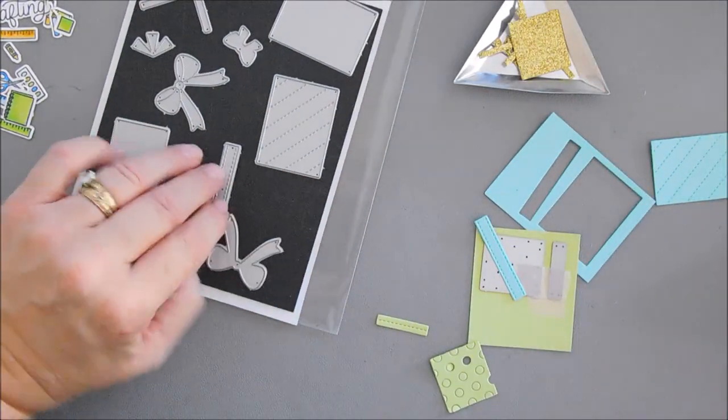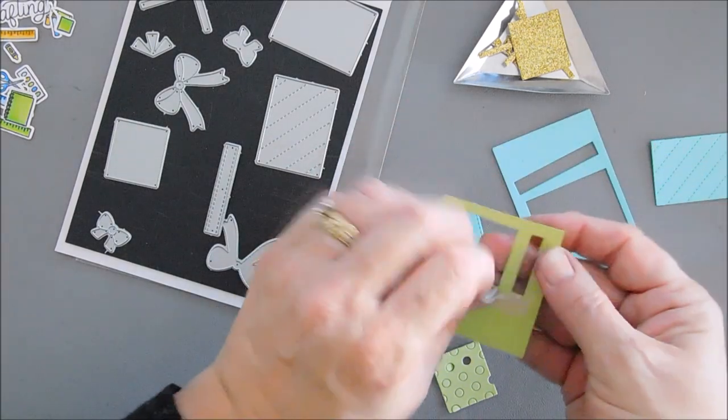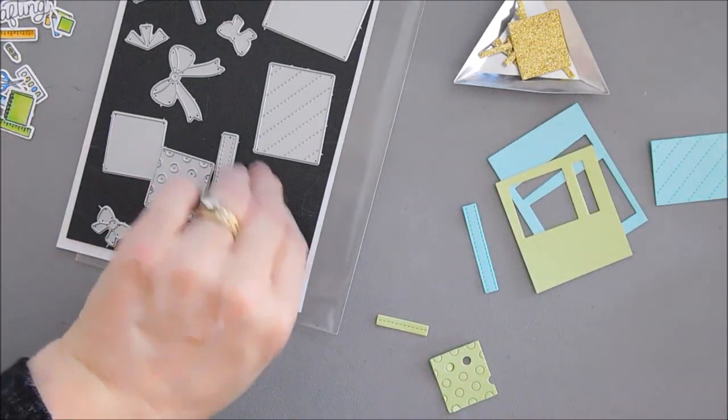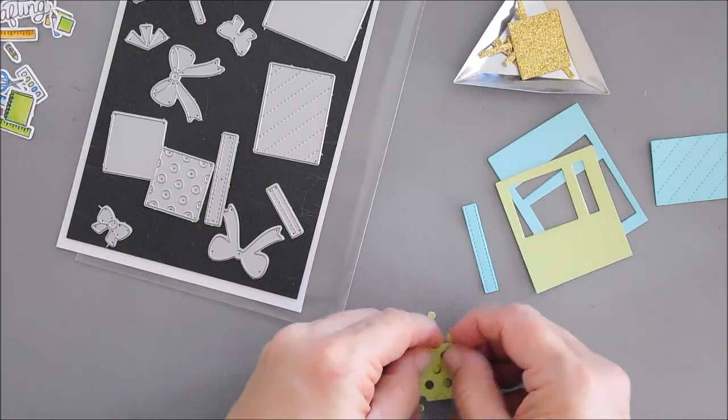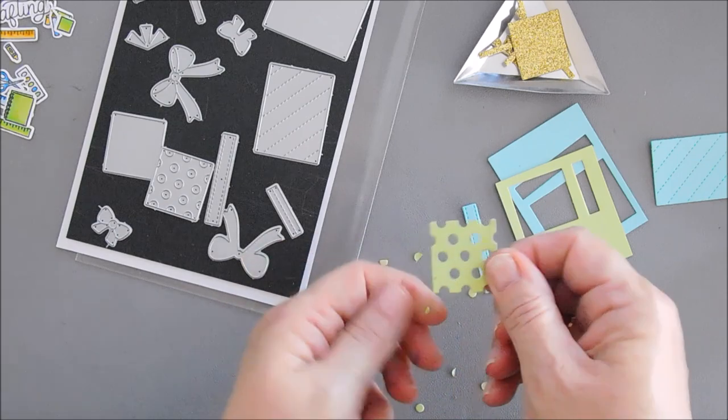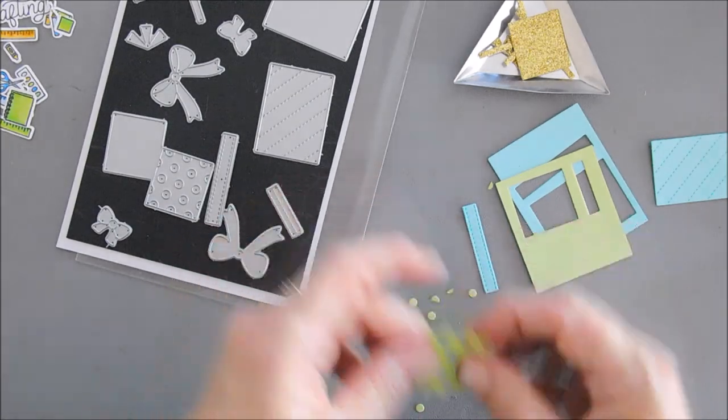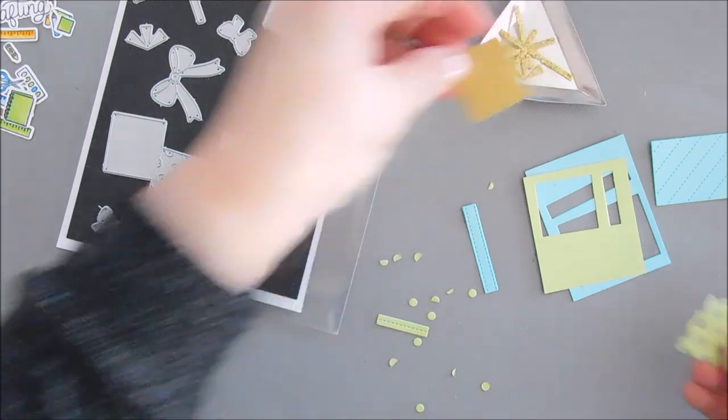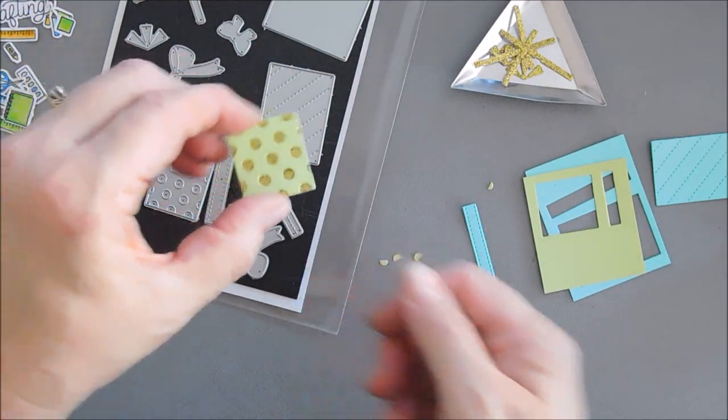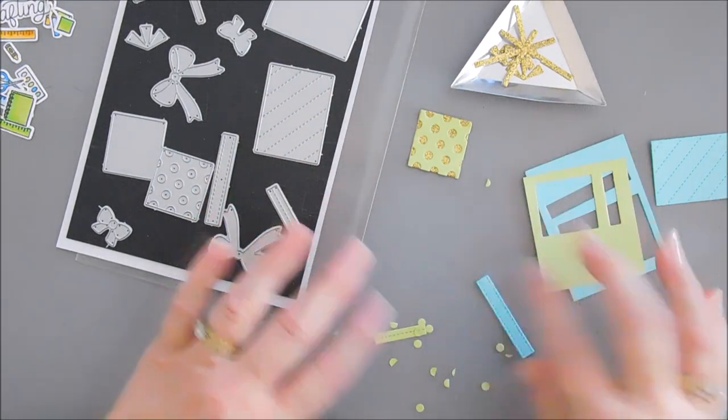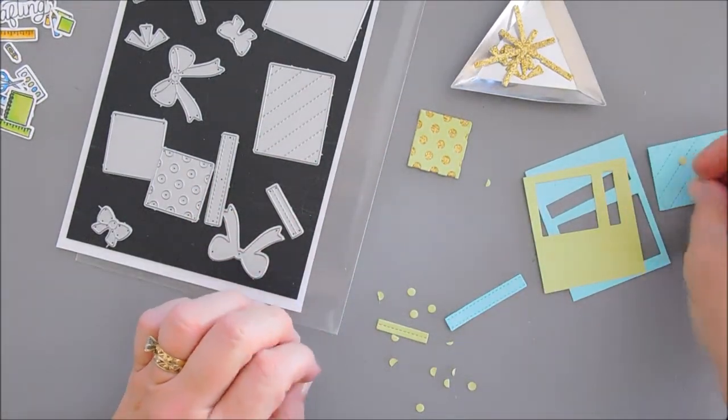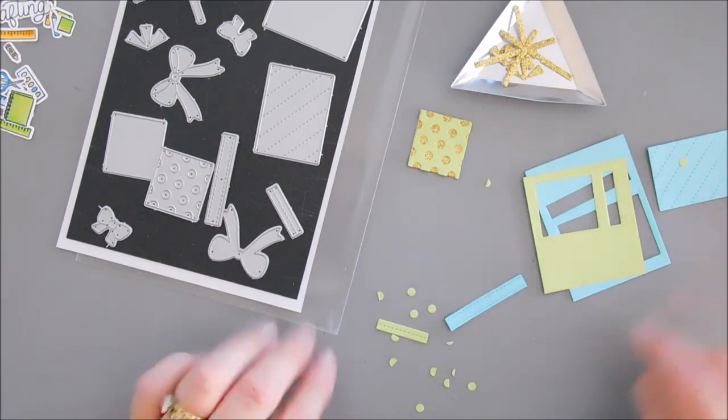Okay, I went ahead and die cut out everything that I needed. I just love the stitch detail in here. This is that polka dot panel that you just take all the polka dots out, which is really nice, and then you can layer it. I die cut out this with gold, so we have gold polka dots. It makes it really easy. And then if you want to keep the polka dots, you could actually add them to another present if you wanted to.